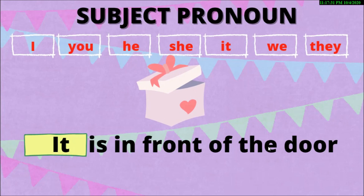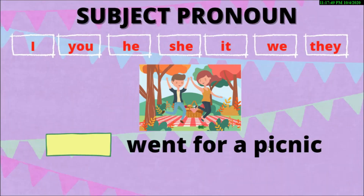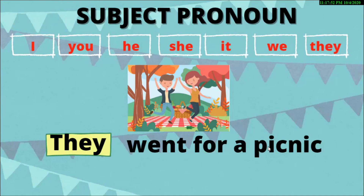What if there are multiple things or people, like in this sentence? An and Anraj went for a picnic. What should we replace 'An and Anraj' with? There is more than one person as a subject, so it is 'they.' Good job. They went for a picnic.